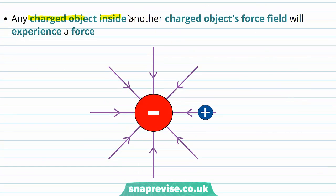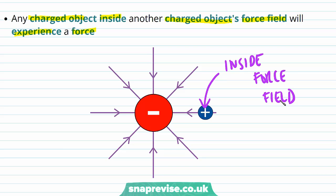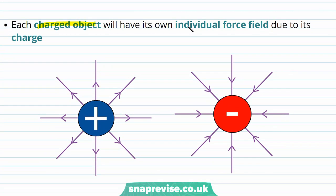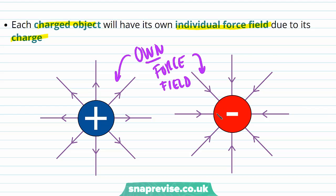Any charged object that is inside another charged object's force field will experience a force. For example, this positive charge is inside the negative charge's force field, and therefore it's going to experience a force. Each charged object will have its own individual force field due to its charge, so note how both of these charged objects have their own force field. You might be wondering about the direction of the arrows on the field lines — don't worry about these for now, but just notice that they're different for the positive charge as they are for the negative charge.